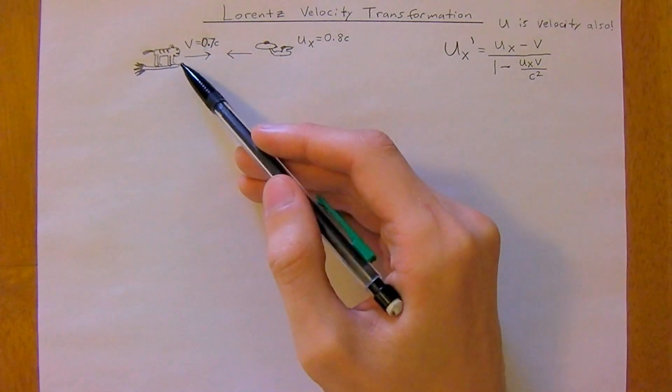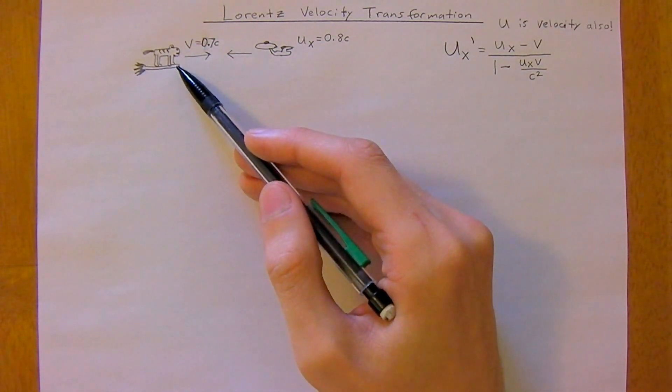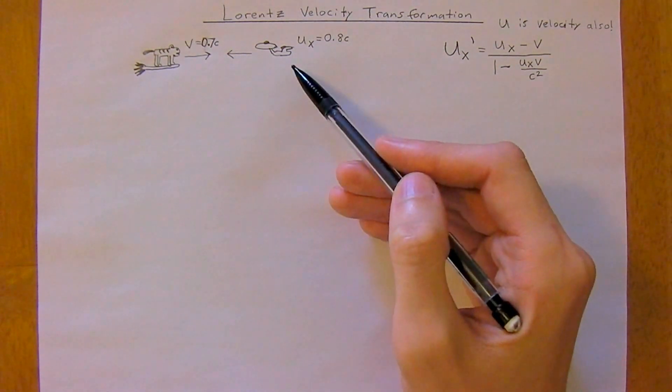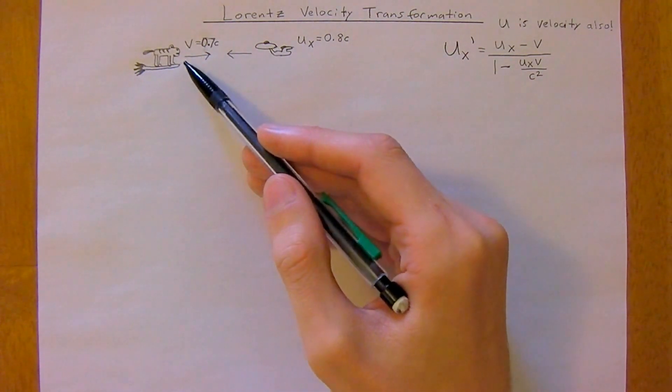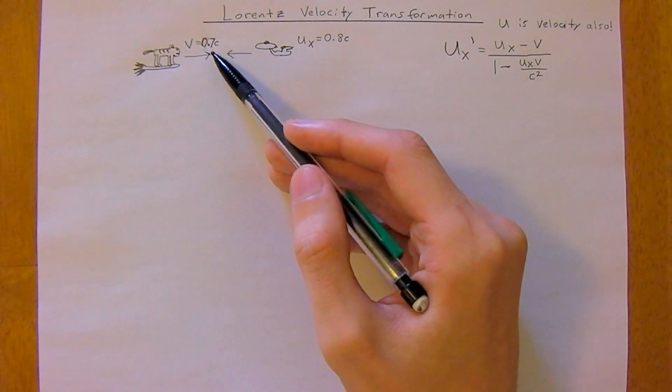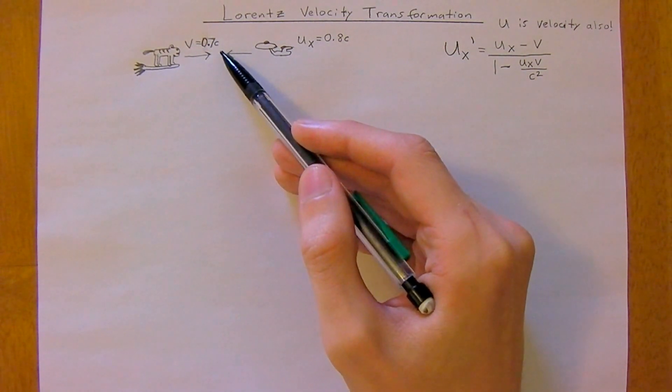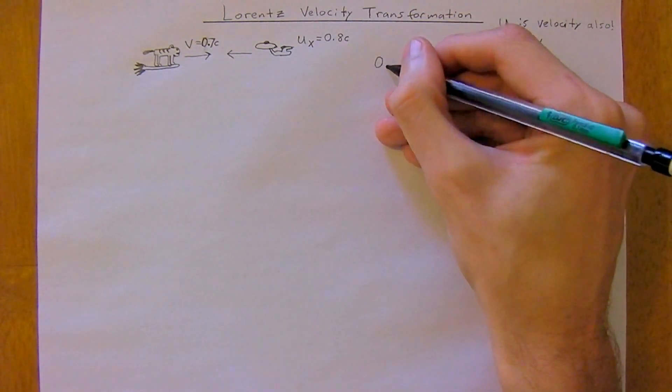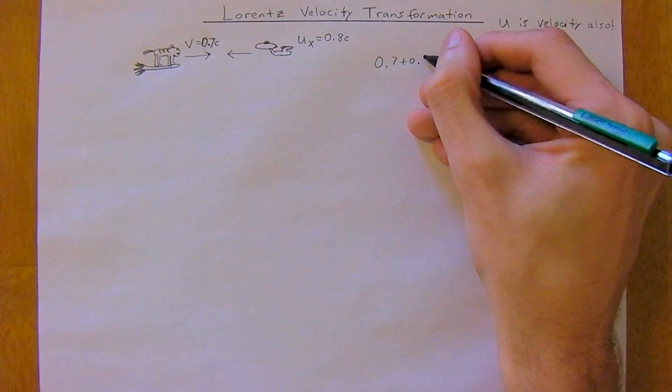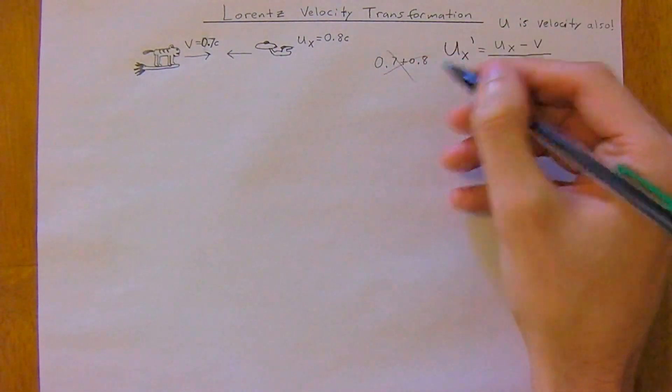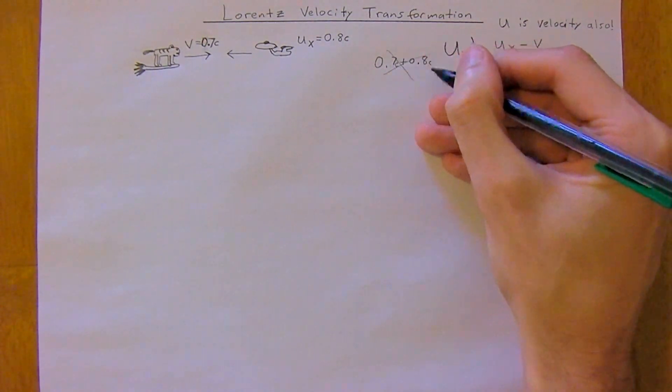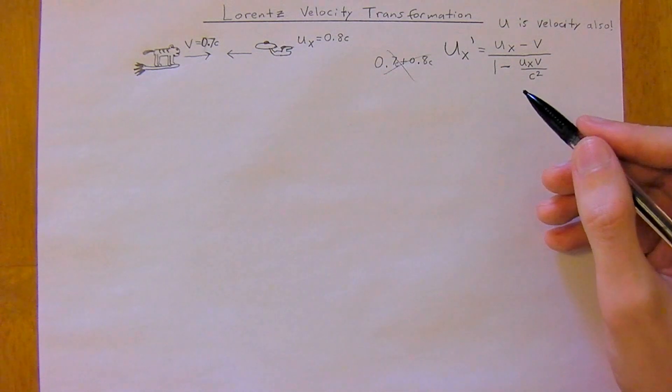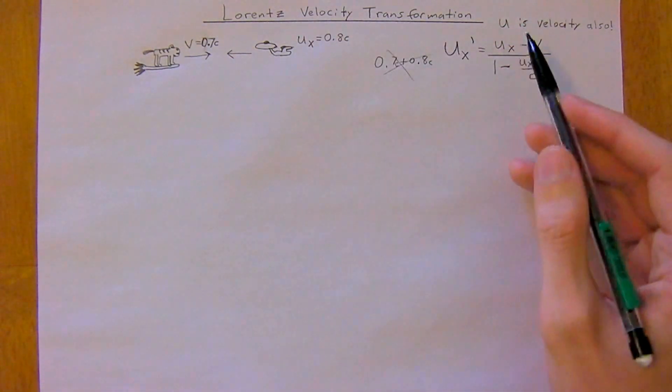We want to figure out what the cat sees this spaceship approaching it at. Traditionally you might think the cat's traveling at 0.7C and the spaceship is traveling at 0.8C, so you might just try adding them to get 1.5C. But that's not right because you're gonna get a number which is greater than C, and we know that can't happen. So we need to use the Lorentz Velocity transformation.